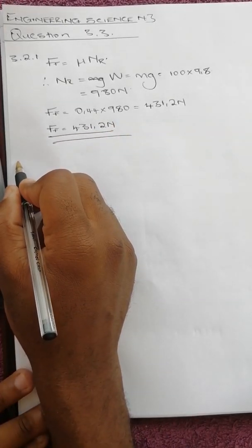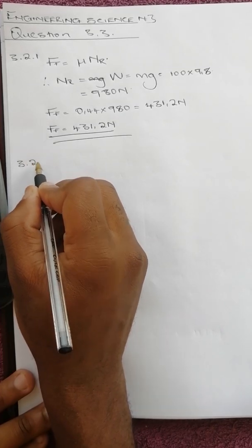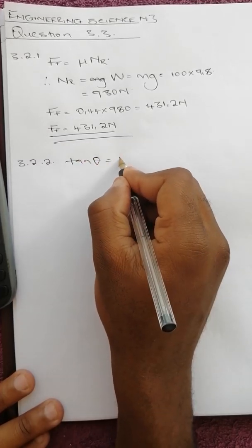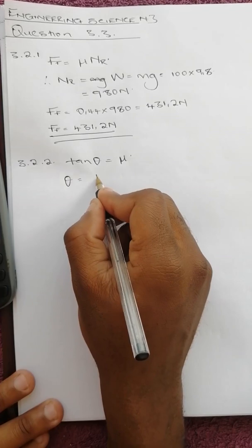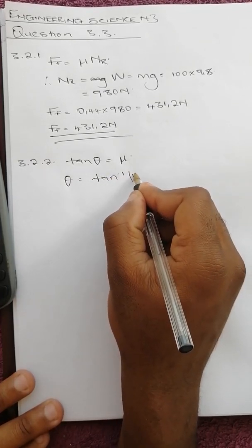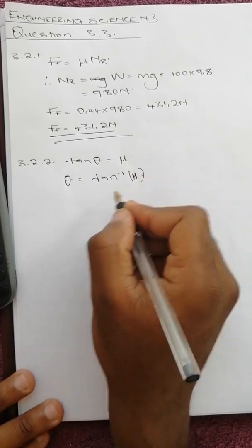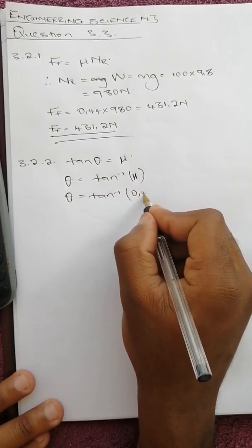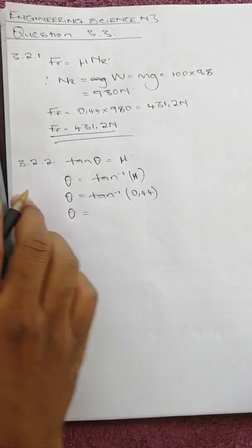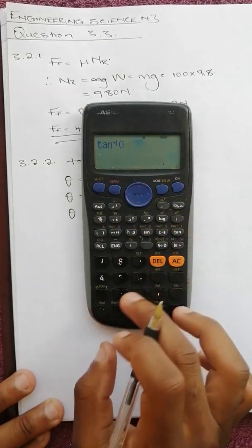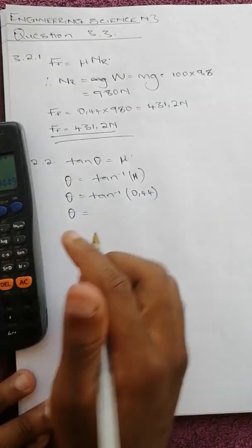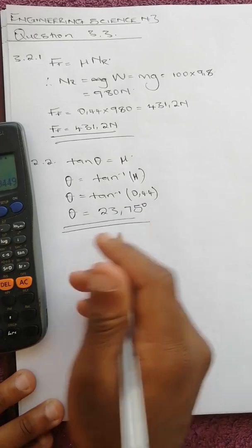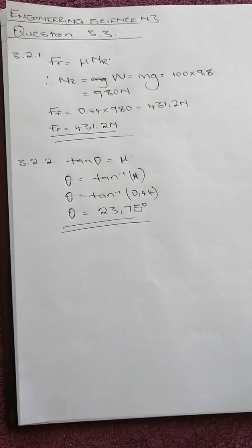Then 3.3.2 says calculate the angle of friction. Tan theta equals mu, so theta equals tan inverse of mu. Therefore theta equals tan inverse of 0.44, which gives 23.75 degrees. That is our angle of friction. And that's the end of question 3, which is the end of our question paper.